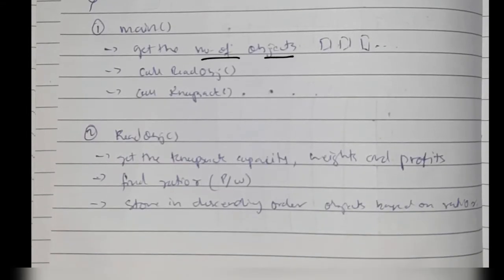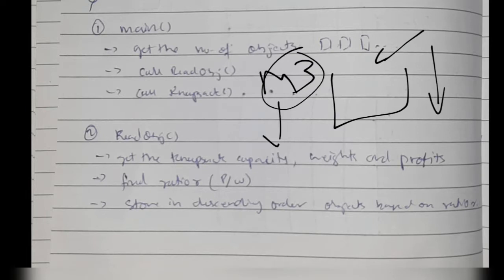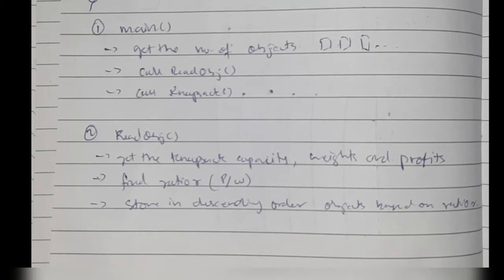The main function gets the number of objects — how many items are there in the knapsack problem. What we'll be discussing is the greedy method of knapsack. If you already know about it, you can move further; otherwise I recommend watching the theoretical explanation in Module 3, linked in the description. It's a small topic, but I'll also explain everything here.